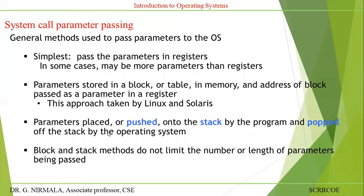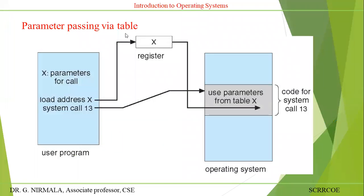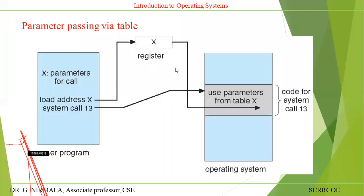Next, parameter passing via table. On one side is the user program and on the right hand side you have the operating system. To pass the X parameters for a call — if you want to call any function you have to pass the parameters. Load address X, then system call 13.